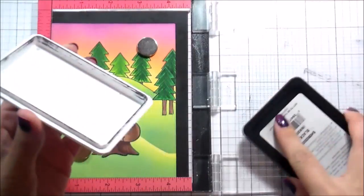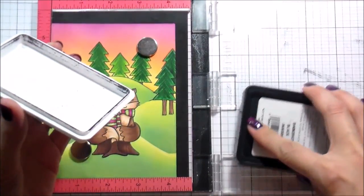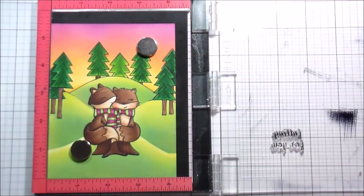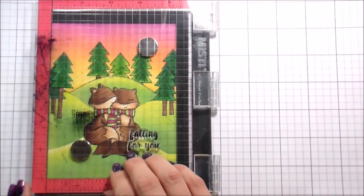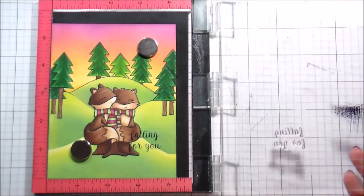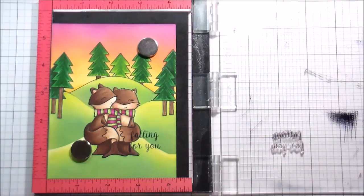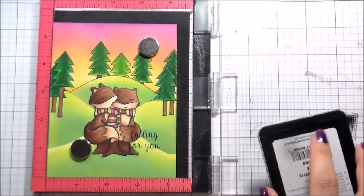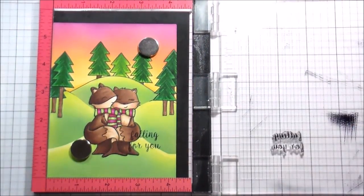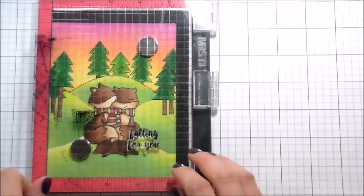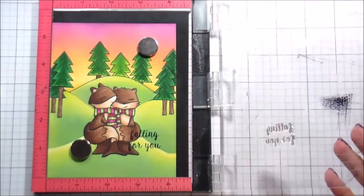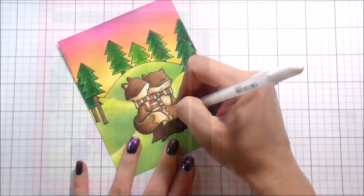I pulled out this sentiment that says falling for you, since it's kind of more of a fall card, from the Lumberjack Love Set. And I have a problem when I'm building scene cards that I just see all of these cute images, this beautiful scenery, and I don't take the time to think about where my sentiment is going to go.